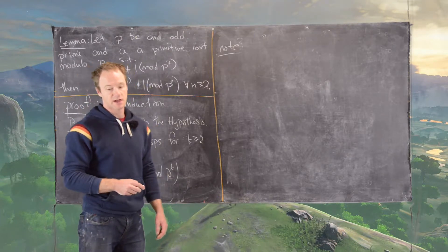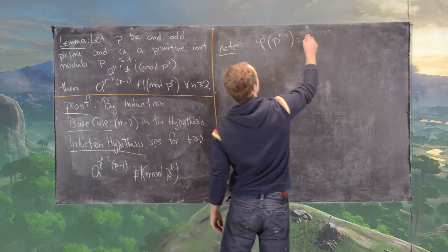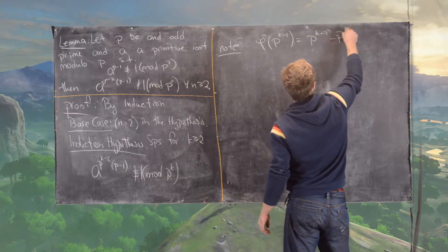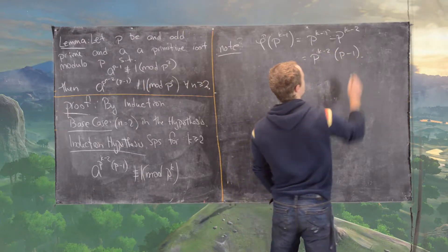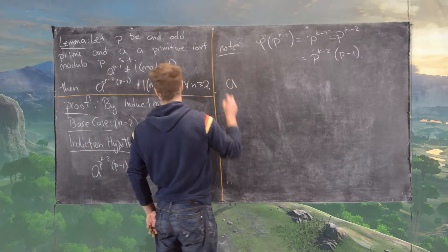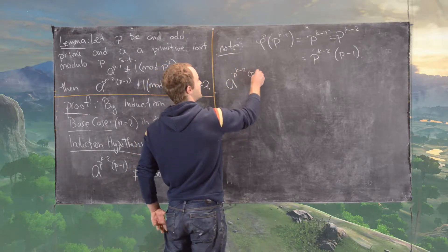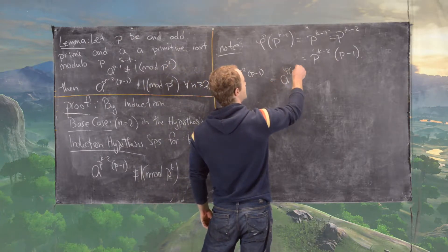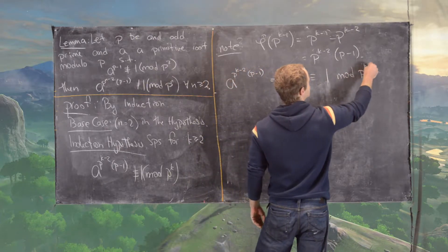The next thing we want to do is the following. Notice that phi of p to the k minus 1 equals p to the k minus 1 minus p to the k minus 2, which equals p to the k minus 2 times p minus 1. So what that tells us is that a to the p to the k minus 2 times p minus 1 equals a to the phi of p to the k minus 1, which is congruent to 1 modulo p to the k minus 1.